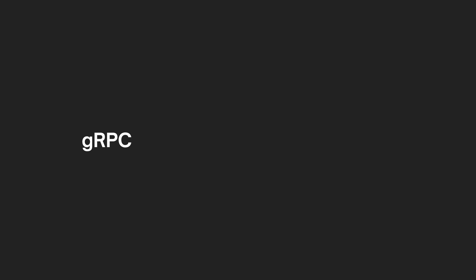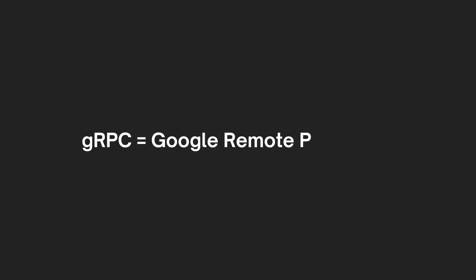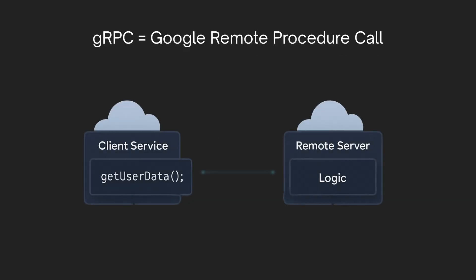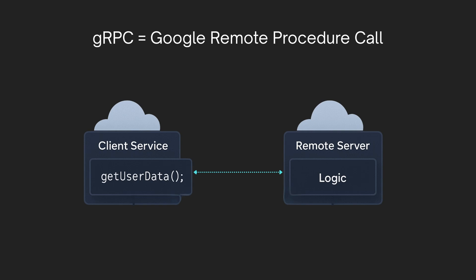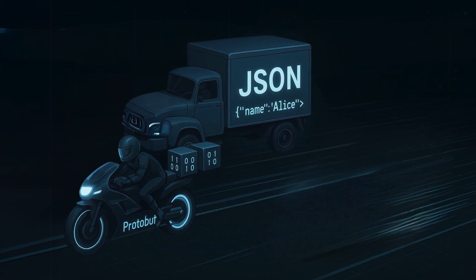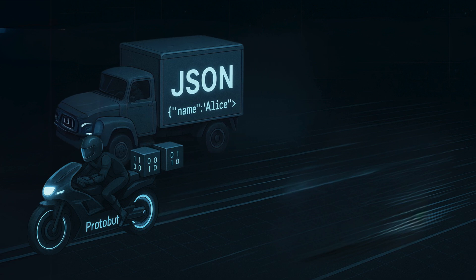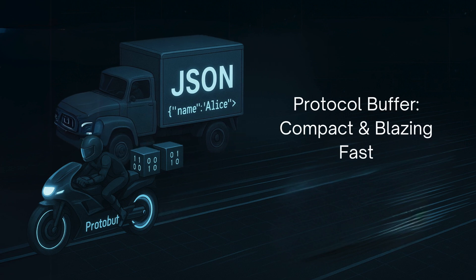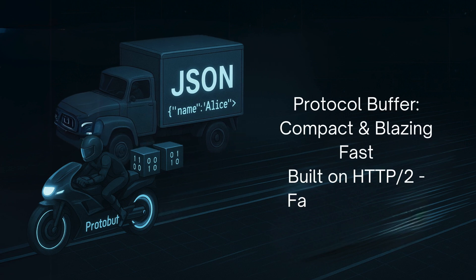gRPC stands for Google Remote Procedure Call. It's an open source framework that lets services call methods on other services as if they were local functions, even though they might be running on different servers. It's built on HTTP/2 and uses protocol buffers, a binary format that's much smaller and faster than JSON.